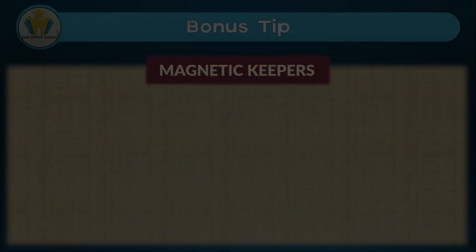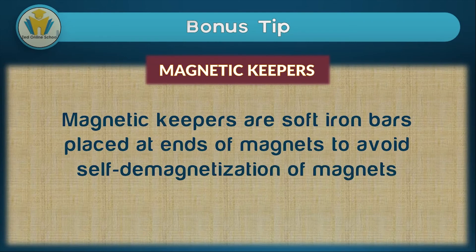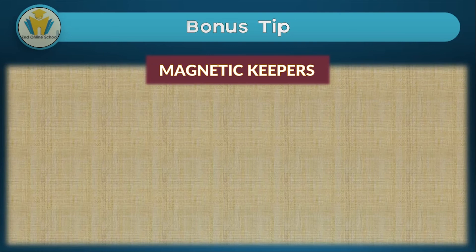In today's bonus tip we'll be looking at magnetic keepers. Magnetic keepers are soft iron bars placed at the ends of magnets to avoid self-demagnetization. This principle comes partly from magnetic permeability. Magnetic keepers are very essential when storing magnets — if magnets are not stored using magnetic keepers, the probability that they will lose their magnetic properties is very high.